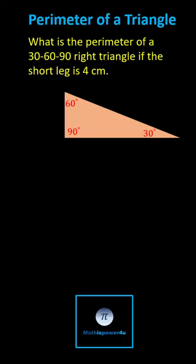What is the perimeter of a 30-60-90 right triangle if the short leg is four centimeters? Any 30-60-90 right triangle is proportional to the right triangle where the short leg has a length of one, the hypotenuse has a length of two, and the longer leg has length square root three.